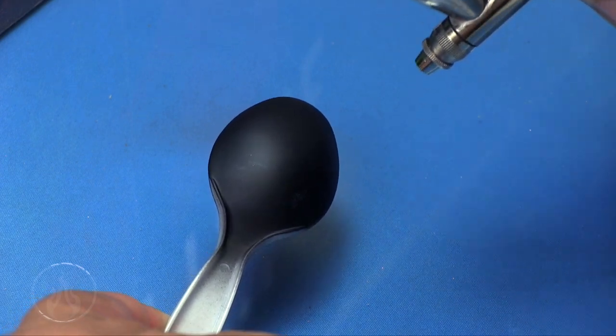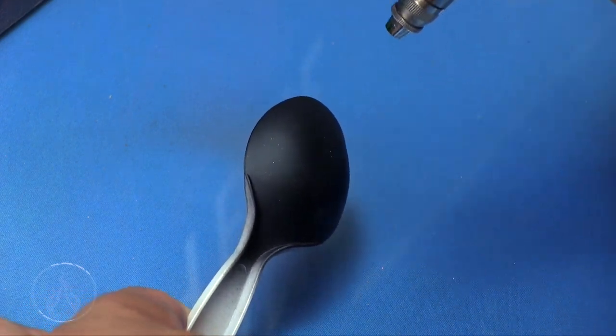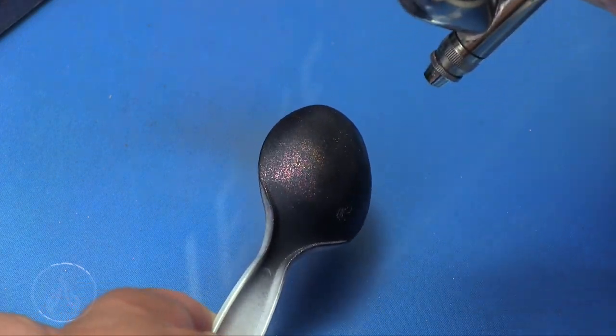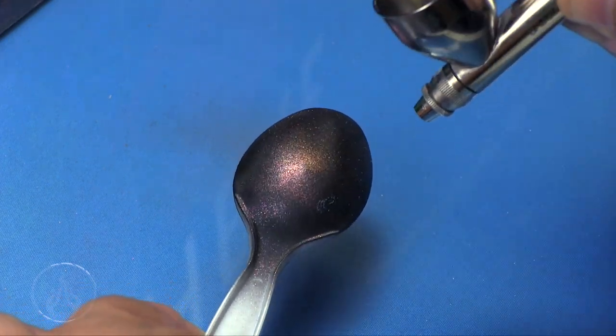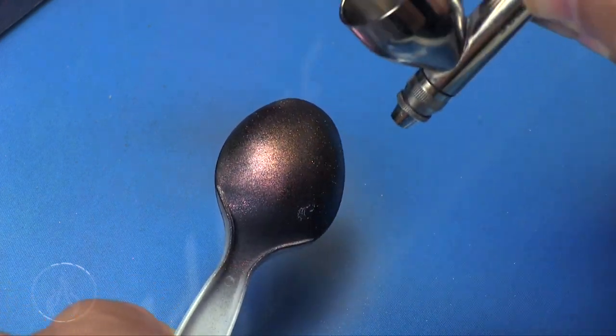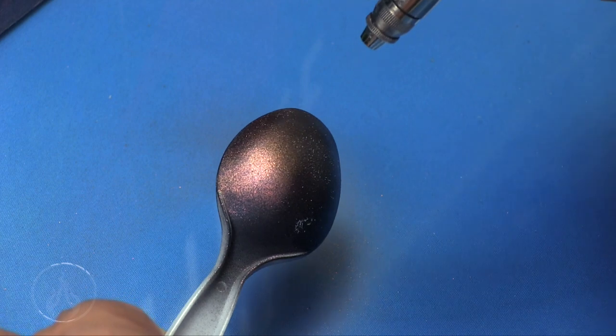We're going to try it again on the primed spoon. This spoon was primed in Vallejo black primer. Again, I'm keeping the brush somewhat closer this time.